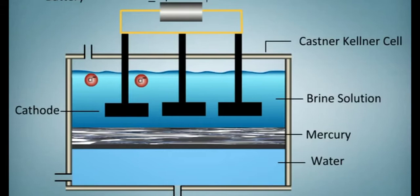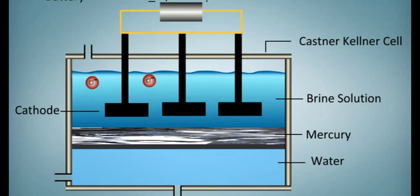The brine solution flows in the same direction and the anode consists of a number of graphite blocks.